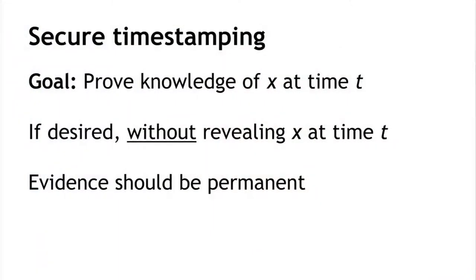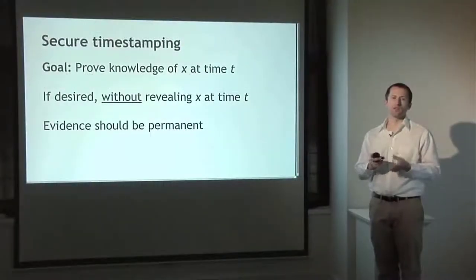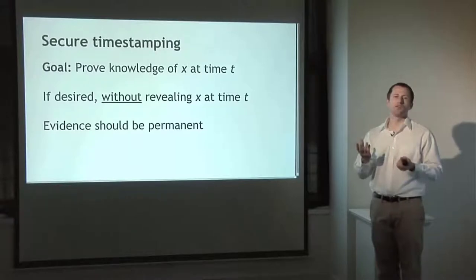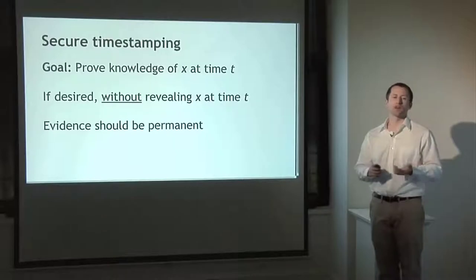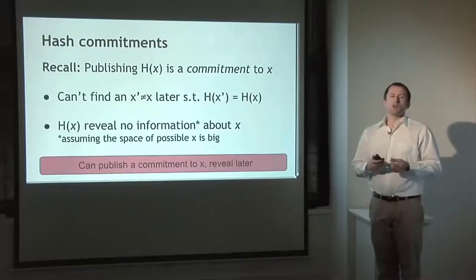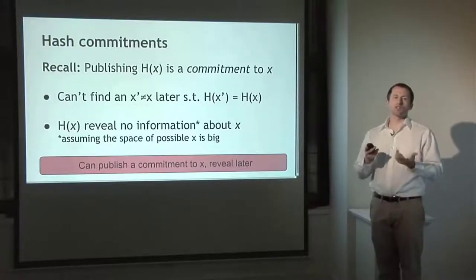The goal of secure timestamping is to prove that we know some value x at a specific time t — no later than time t. Often we want to prove that we know x without actually revealing it at time t, but revealing it later. We want the evidence to be permanent. We can use hash functions to commit to data: instead of publishing x directly, we publish the hash of x.